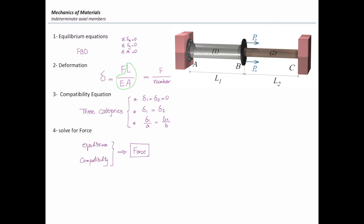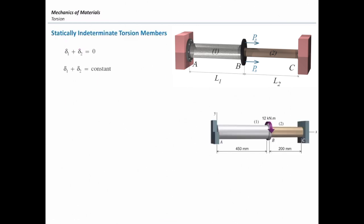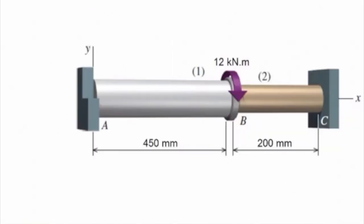Now, we want to use this technique to solve problems related to indeterminate torsional elements. Look at this figure, the bottom figure. The bottom figure consists of two shafts, but instead of being subjected to axial force, it is subjected to a torque. Here definitely there is not any elongation or change in the length.